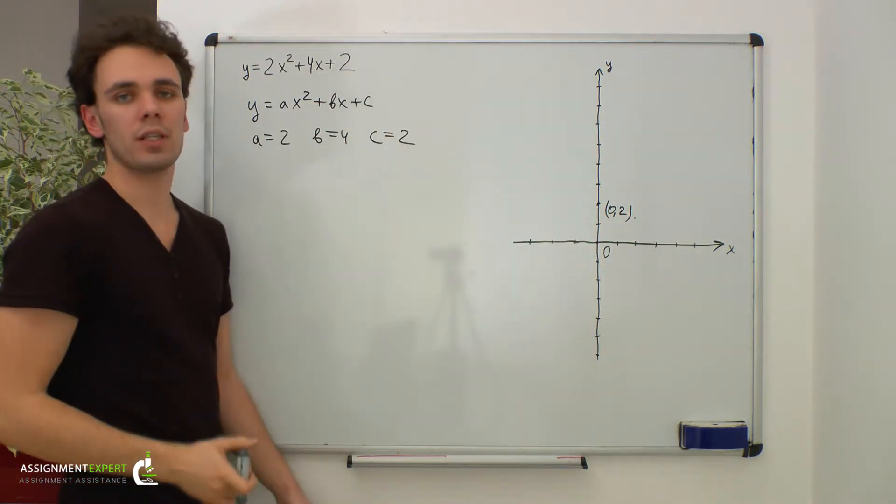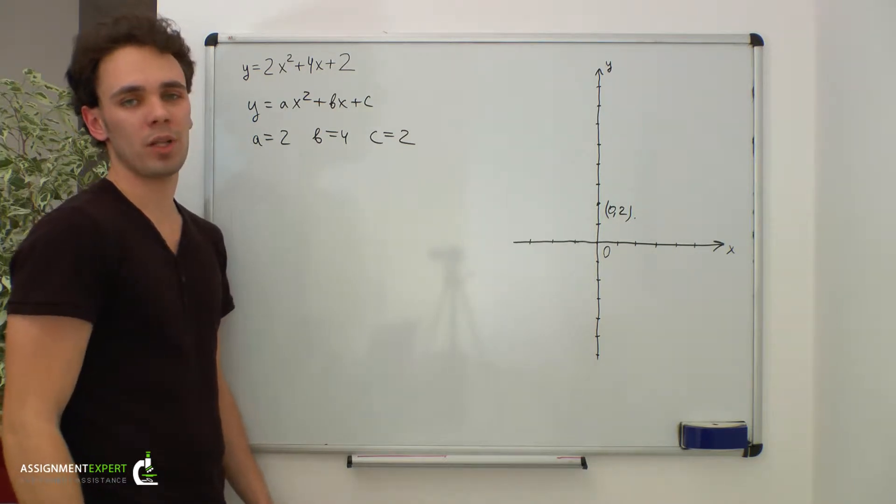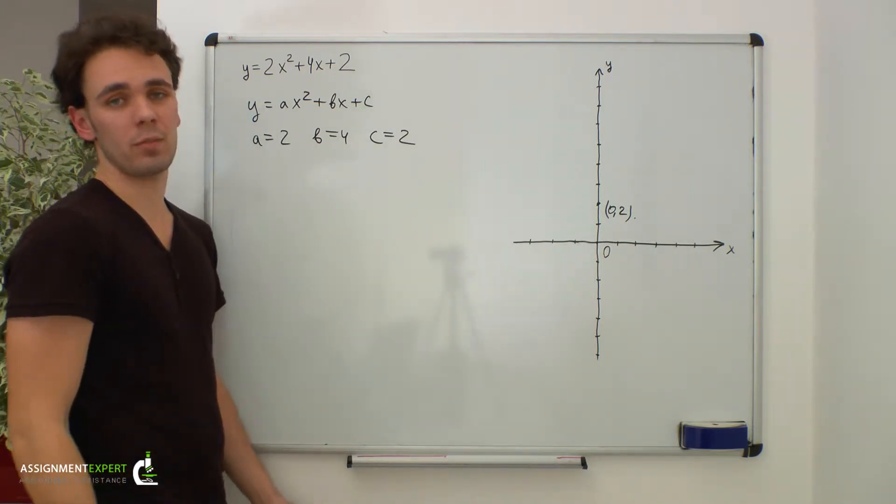a is greater than 0 and this means that the branches of our parabola go upwards. Now let's find the vertex of the parabola.